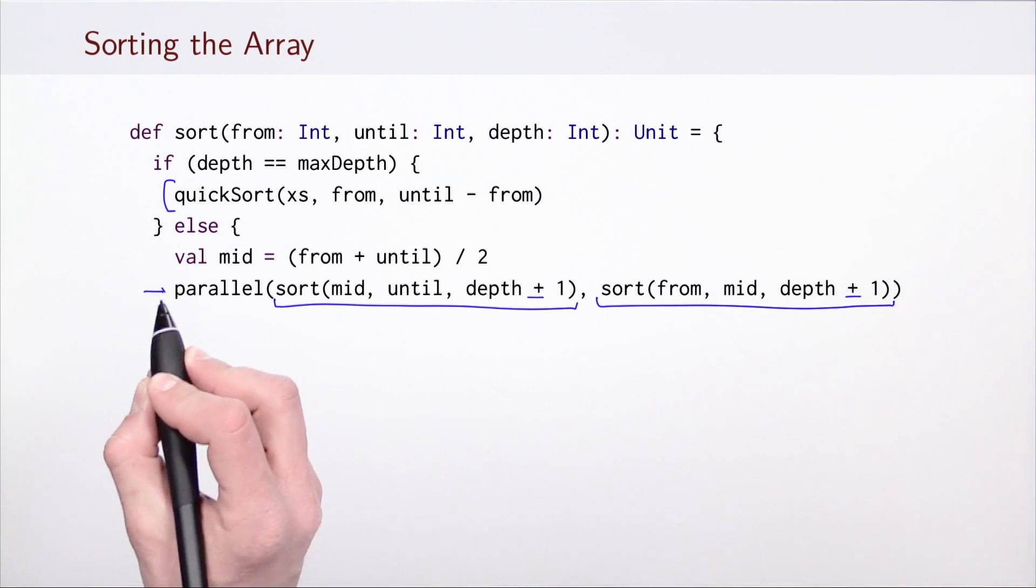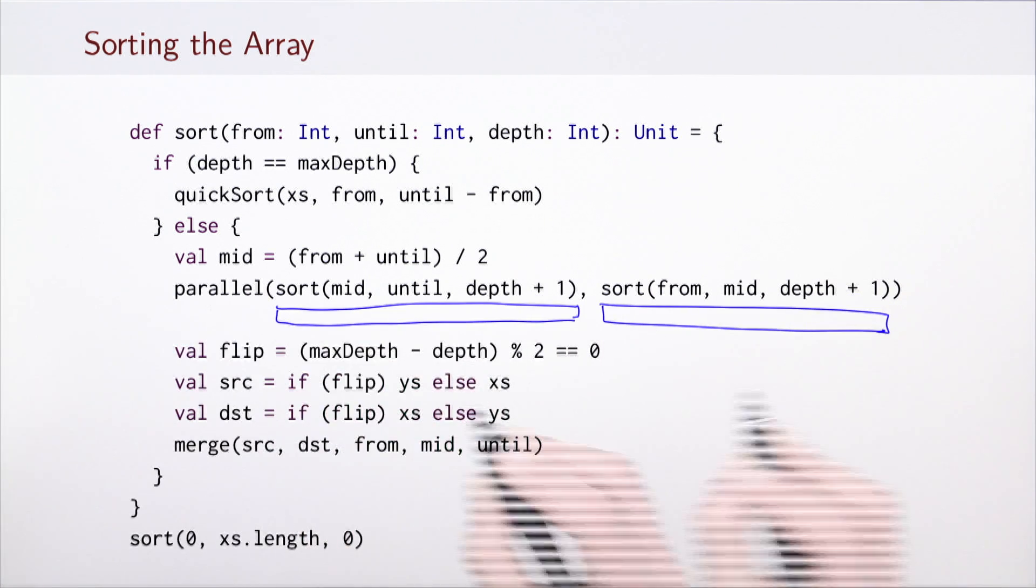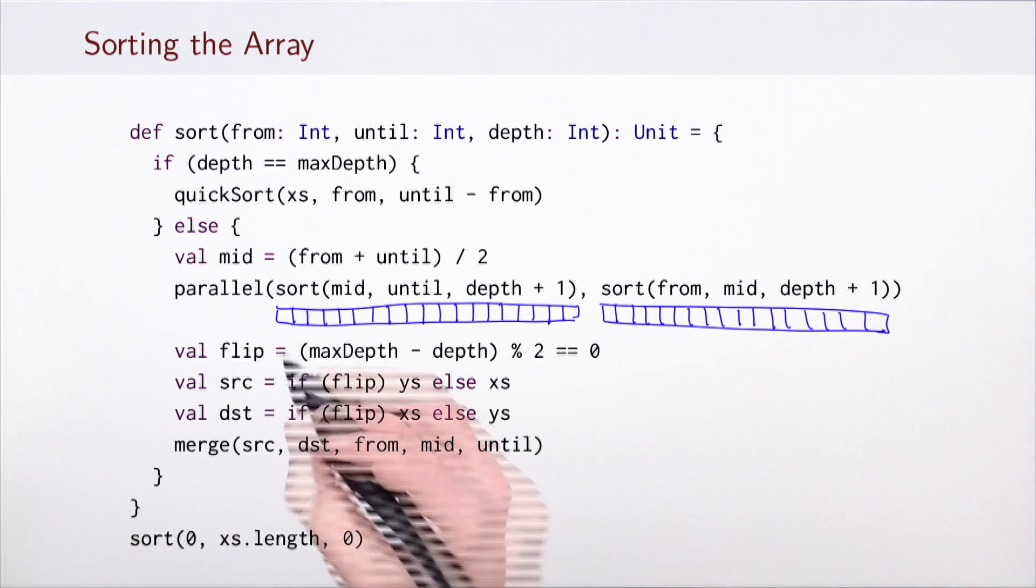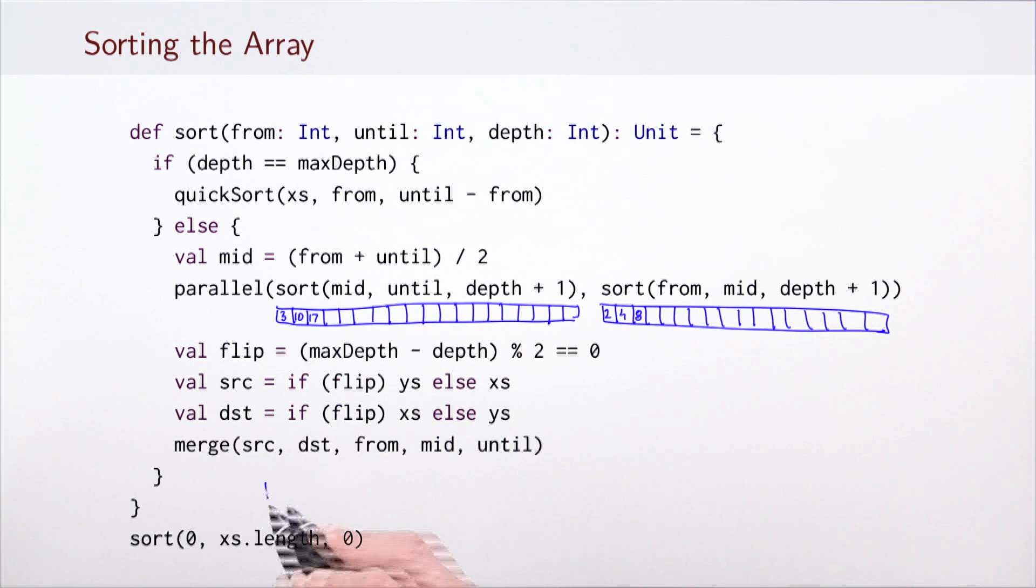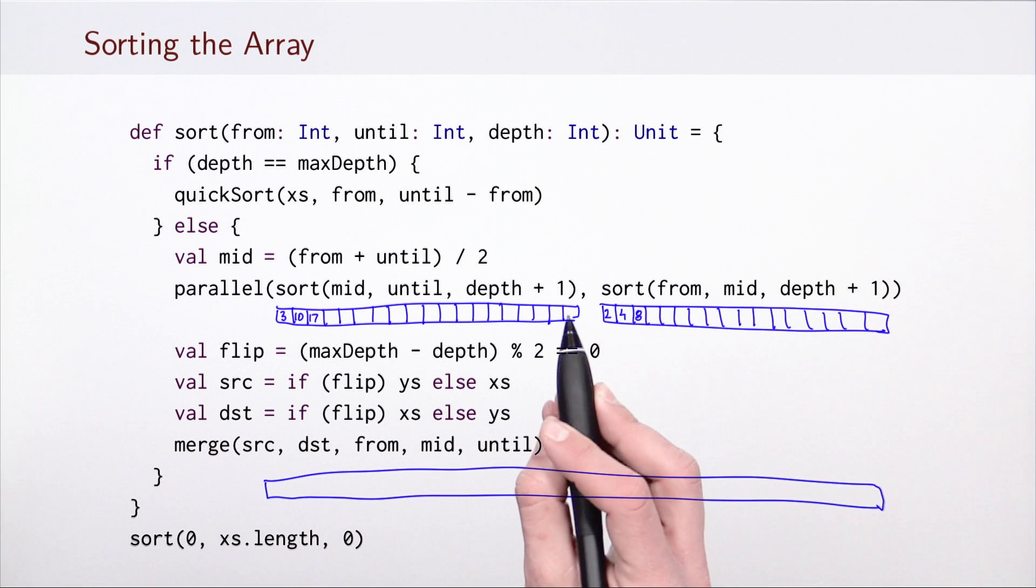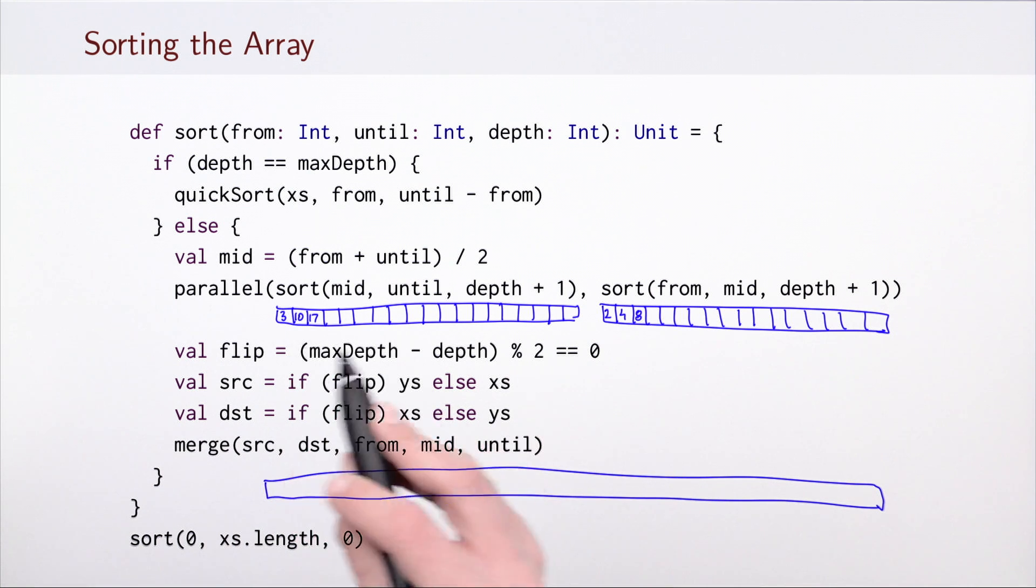These two sorts are taking place in parallel. Each of the recursive invocations is going to ensure that the appropriate segment of the array is sorted.